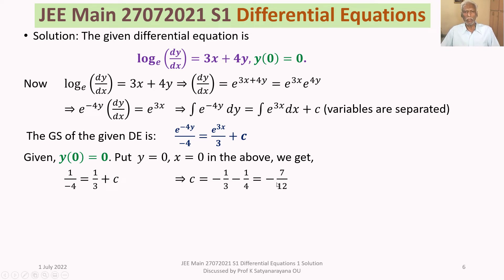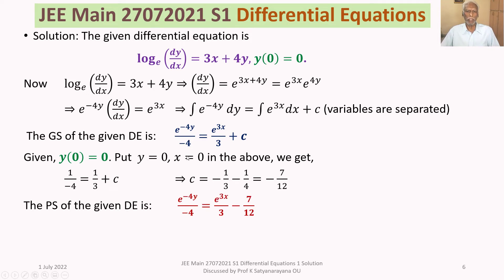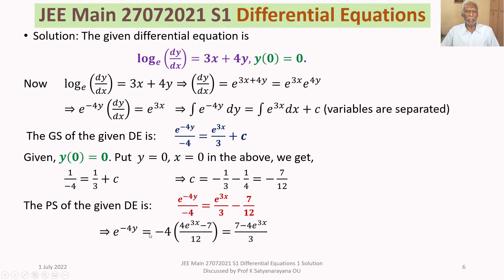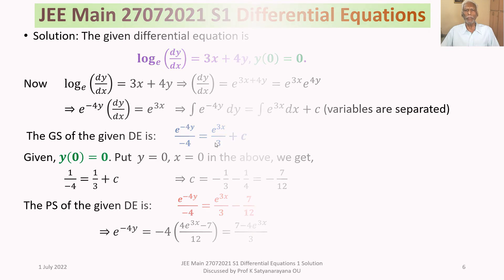Thus c = −7/12, giving us the particular solution: e^(−4y) / (−4) = e^(3x) / 3 − 7/12. Multiplying through by −4 and taking the LCM, we get e^(−4y) = (7 − 4e^(3x)) / 3.